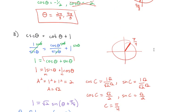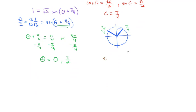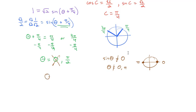But be very careful — cosecant and cotangent are reciprocal functions with sinθ in the denominator. We have a domain restriction that sinθ cannot equal 0. Sine equals 0 at θ = 0 or θ = π, so θ cannot equal 0 or π. That means we have to throw out θ = 0, since it makes the original expression undefined. The only angle that works is θ = π/2.